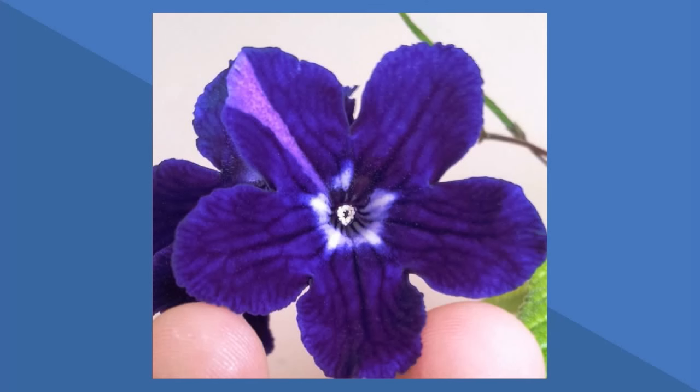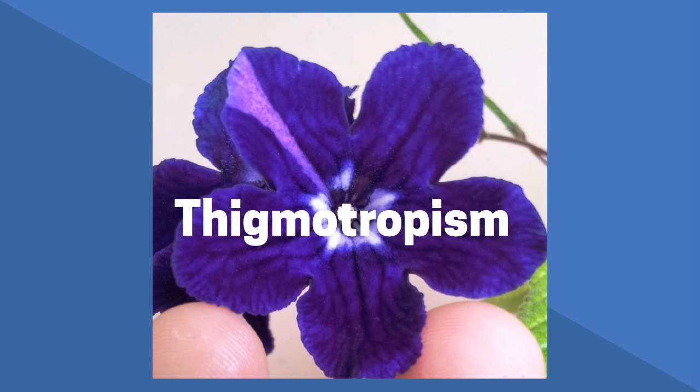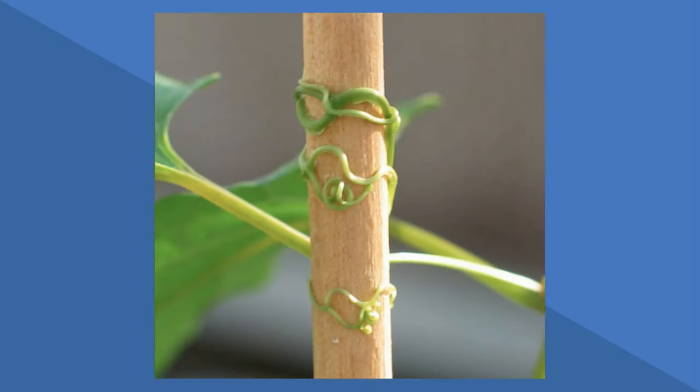First, touch. Some plants have what is called thigmotropism. For example, stems of many vines such as grapes and morning glories show a positive thigmotropism. As vines grow they coil around any object they touch.